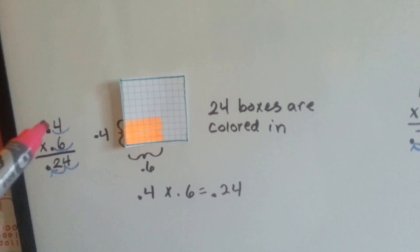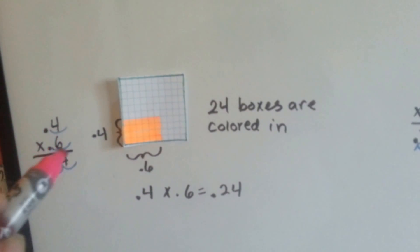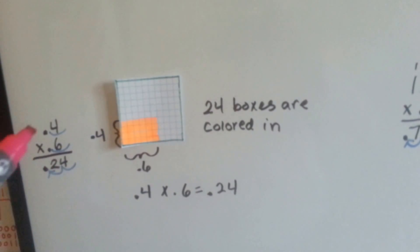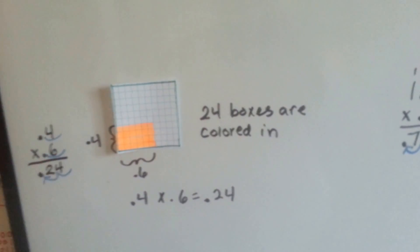If we do it the stacked way, 4 times 6 is 24, we hop once, twice, so in the answer we hop once, twice. We count both hops for the decimals in both of these.